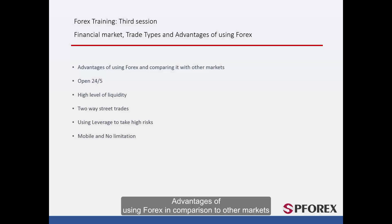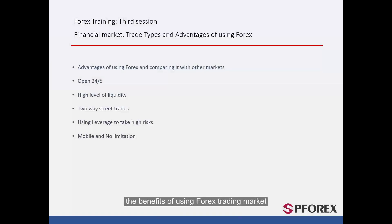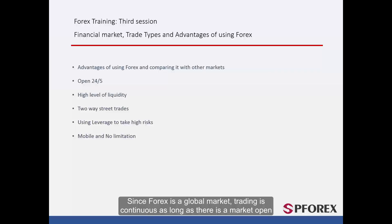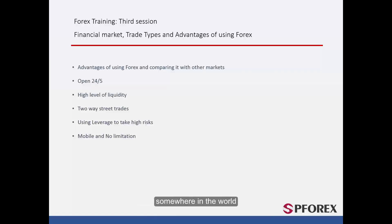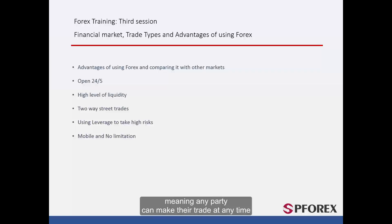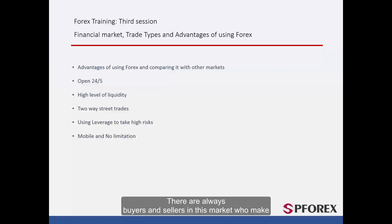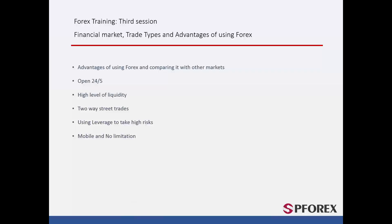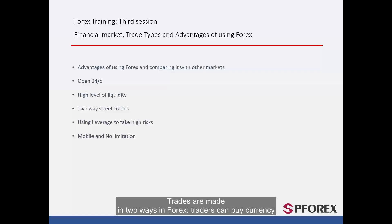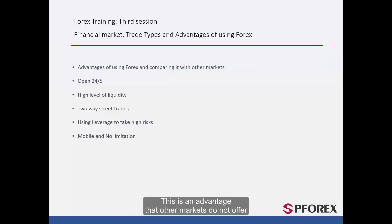Advantages of using Forex in comparison to other markets. The first benefit is that Forex is operational 24 hours a day. Since Forex is a global market, trading is continuous as long as there is a market open somewhere in the world. It is an interbank network which works day and night, meaning any party can make their trade at any time. The second benefit is that the Forex market also enjoys the highest level of liquidity. There are always buyers and sellers in this market who make trades of any amount at any time. Traders can buy currency before its value rises, making profit, or sell currency before it drops, again deriving profit. This is an advantage that other markets do not offer, so there are many opportunities to make profit.